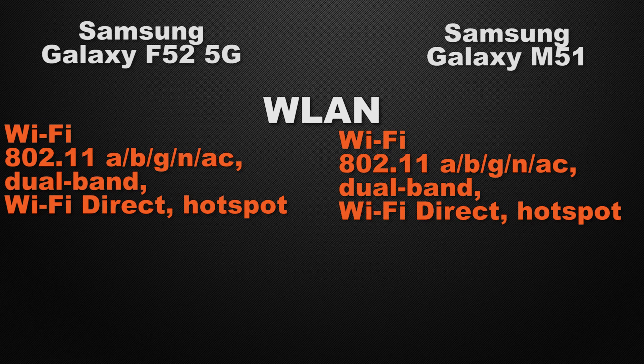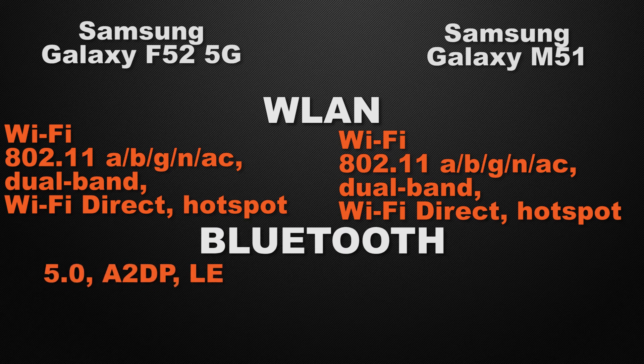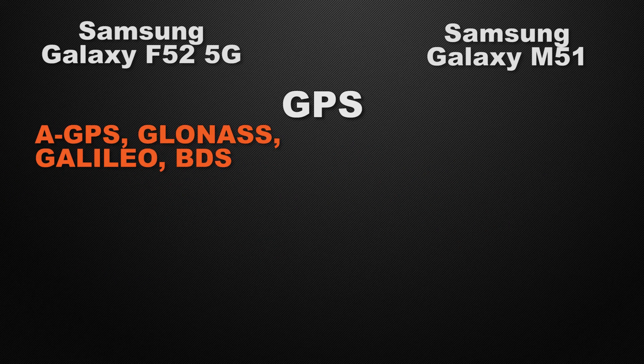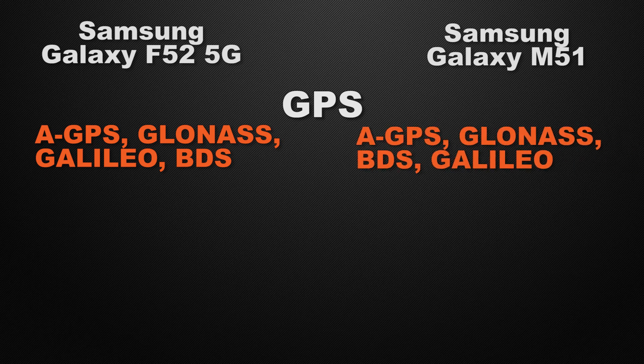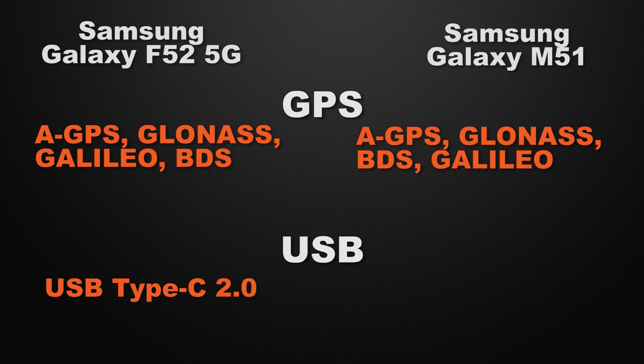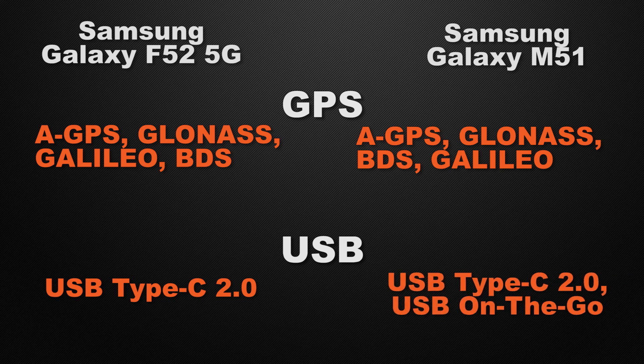Moving to communication chips: both devices have Wi-Fi ac dual-band, Wi-Fi Direct, and hotspot — a tie. Both have Bluetooth 5.0 — a tie. Both include GPS, GLONASS, Galileo, and BDS positioning — a tie. Both have USB Type-C 2.0, however the M51 also supports OTG, so the winner here is M51.